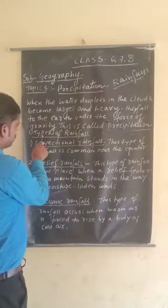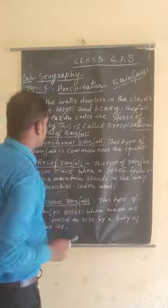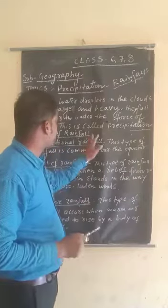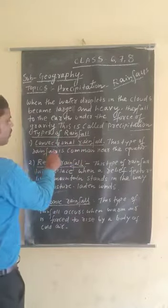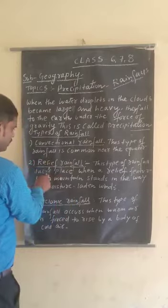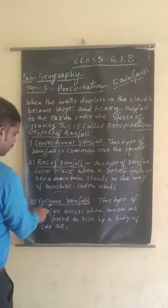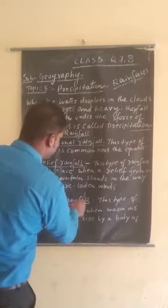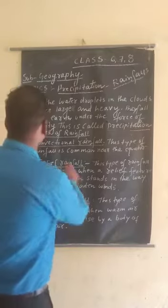Now there are types of rainfalls. There are three kinds of rainfalls: the first is convectional rainfall, the second is relief rainfall, and the third is cyclonic rainfall. Let us discuss them one by one.